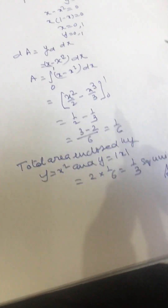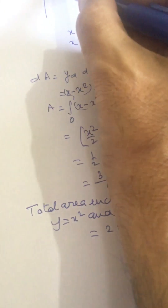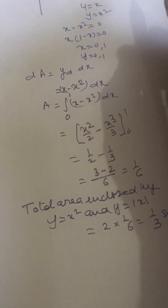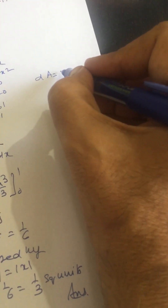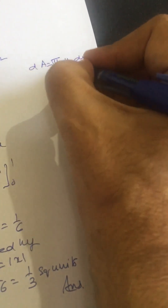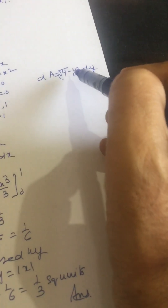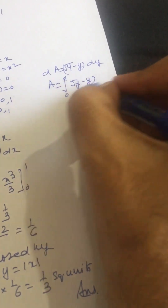Dear friends, this is how we calculate this area. Another way is to use horizontal strips. If the width of this strip is dy, then x will be varying. So dA equals root y minus y, times dy. This is root y minus x, so integrating root y minus y from 0 to 1 dy.